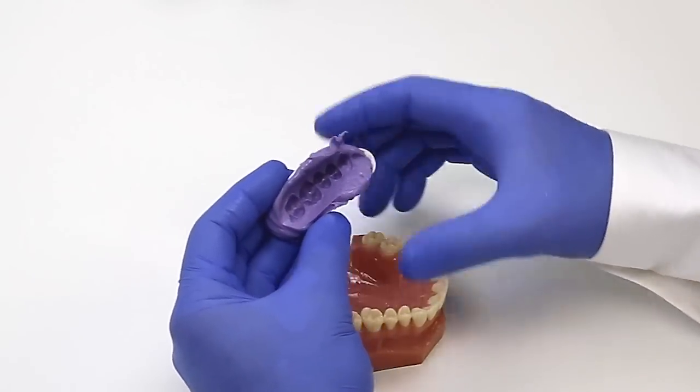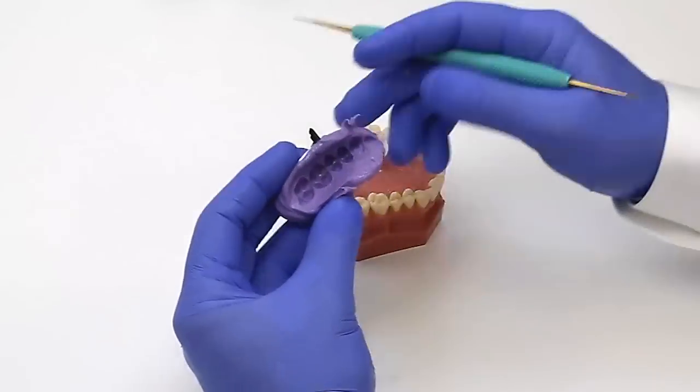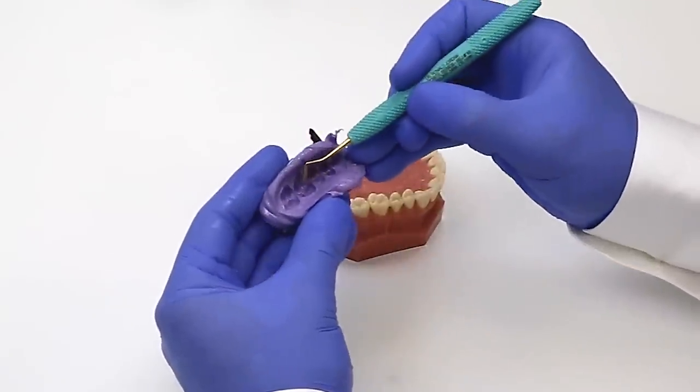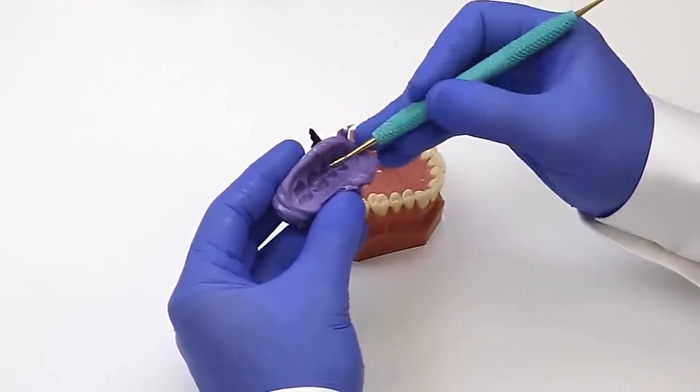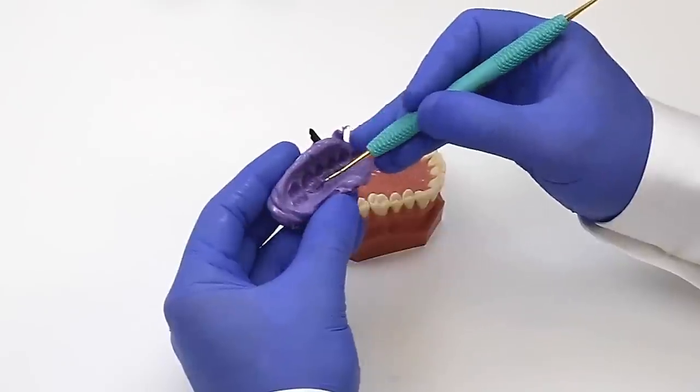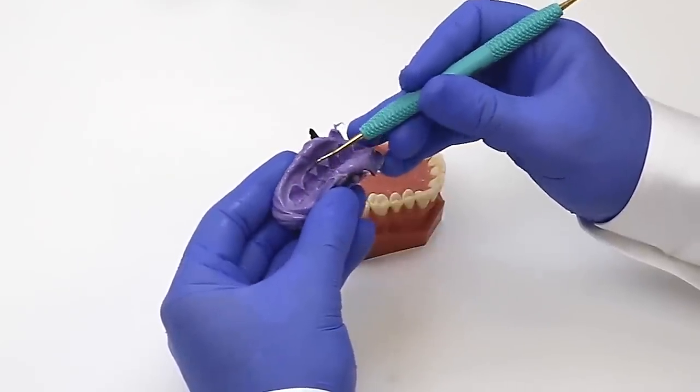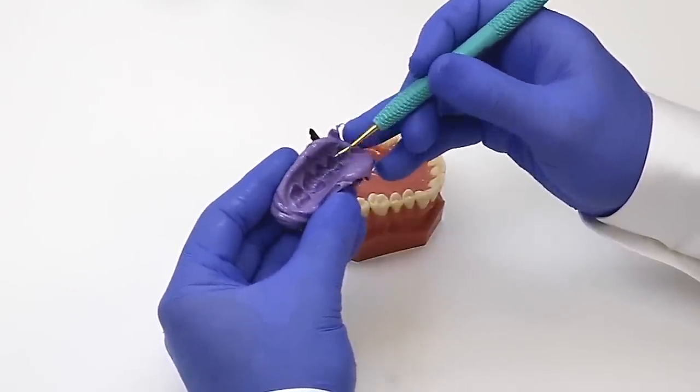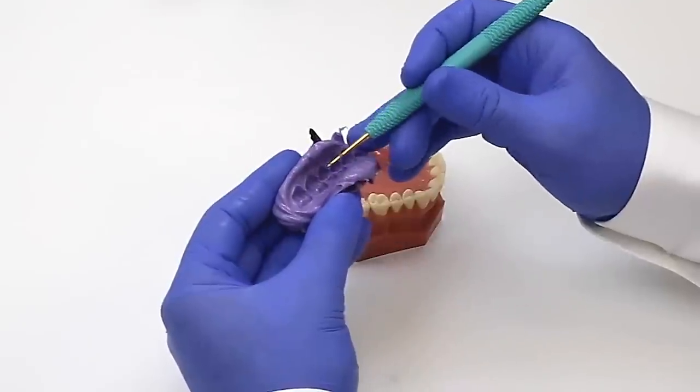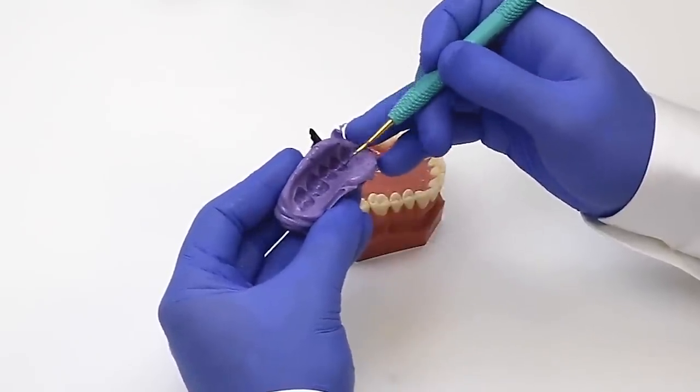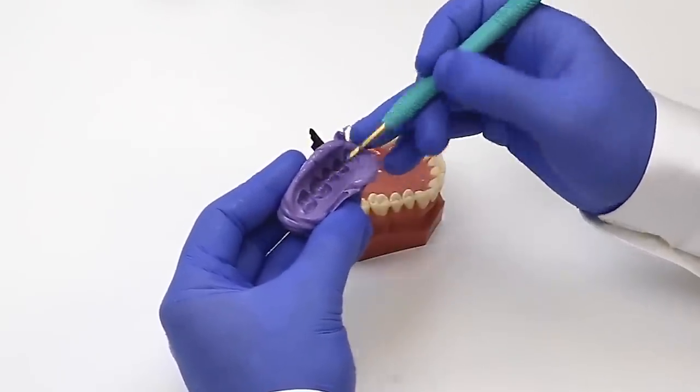And if you look at the detail, we've captured all the occlusal pits and fissures. We have all of the gingival margin around not only our tooth that we're about to prepare, but also every other tooth in the arch. So that's ready to go.